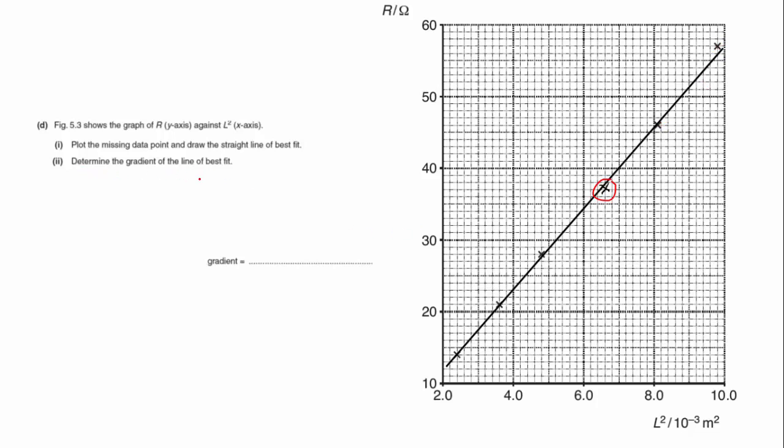And now I have to determine the gradient of the line of best fit. So what I need to do is choose 2 points on the line, and then you must make sure that they're really far apart. So I will choose that point there, just there. And I will choose, let's say, yeah, that looks quite a nice little point there.